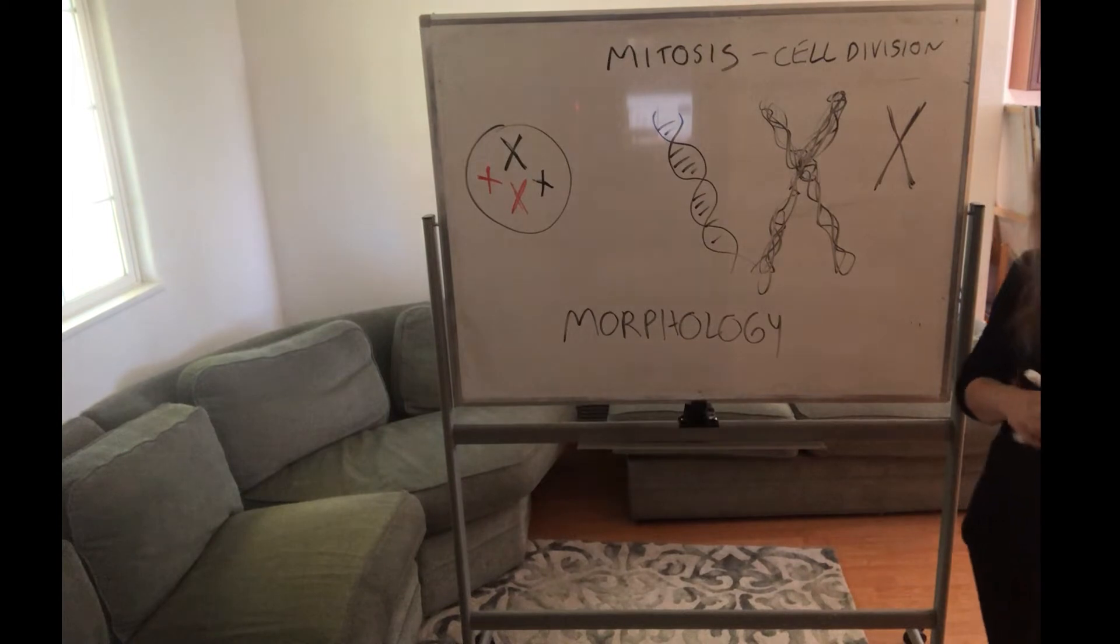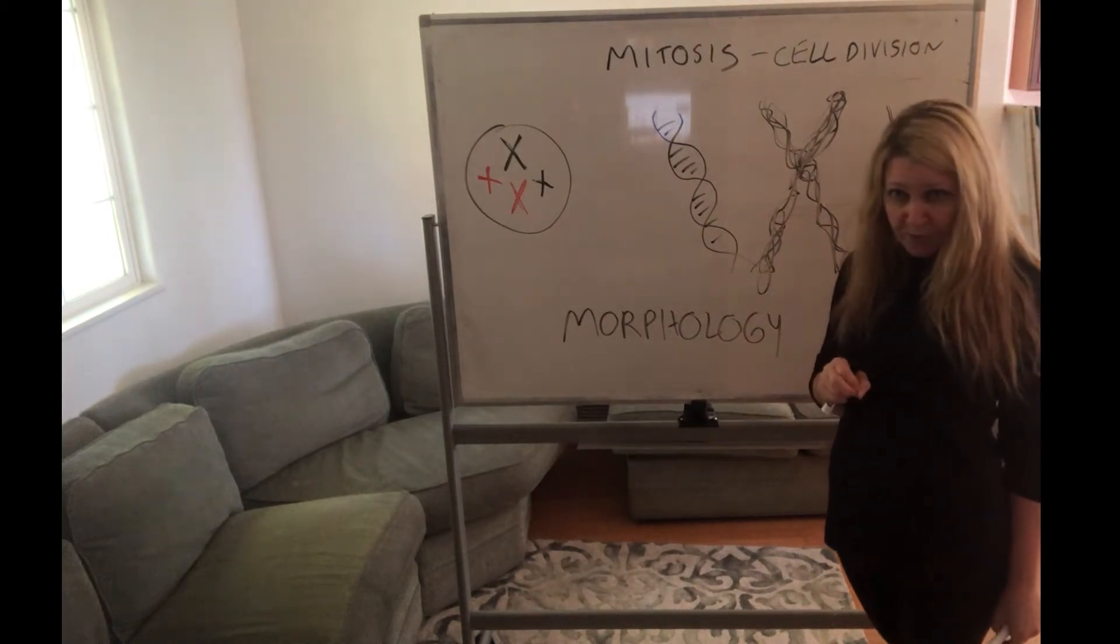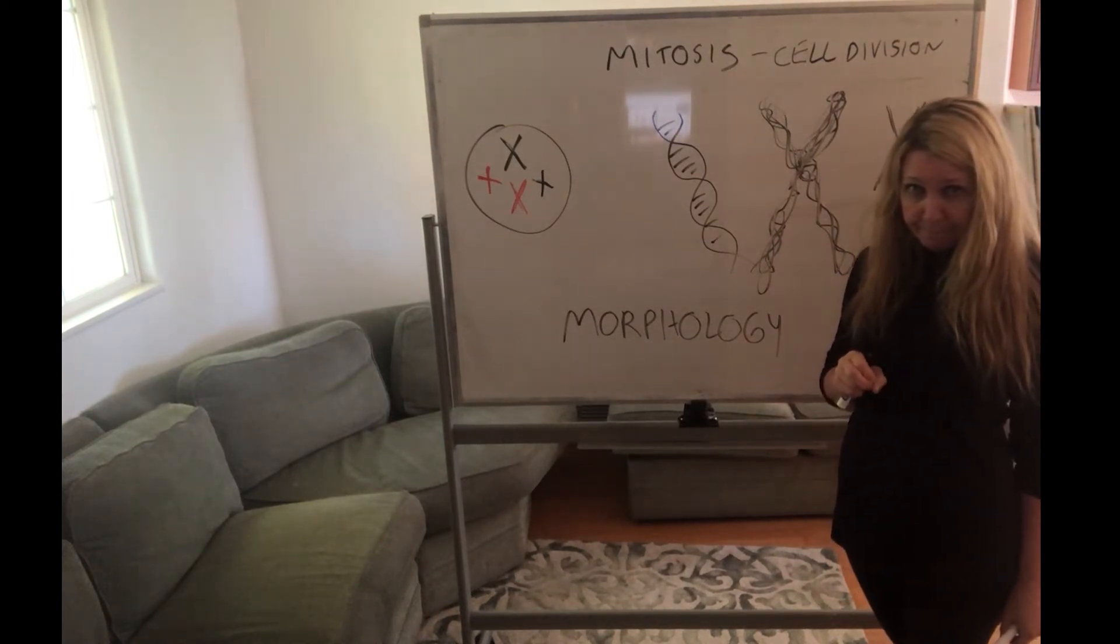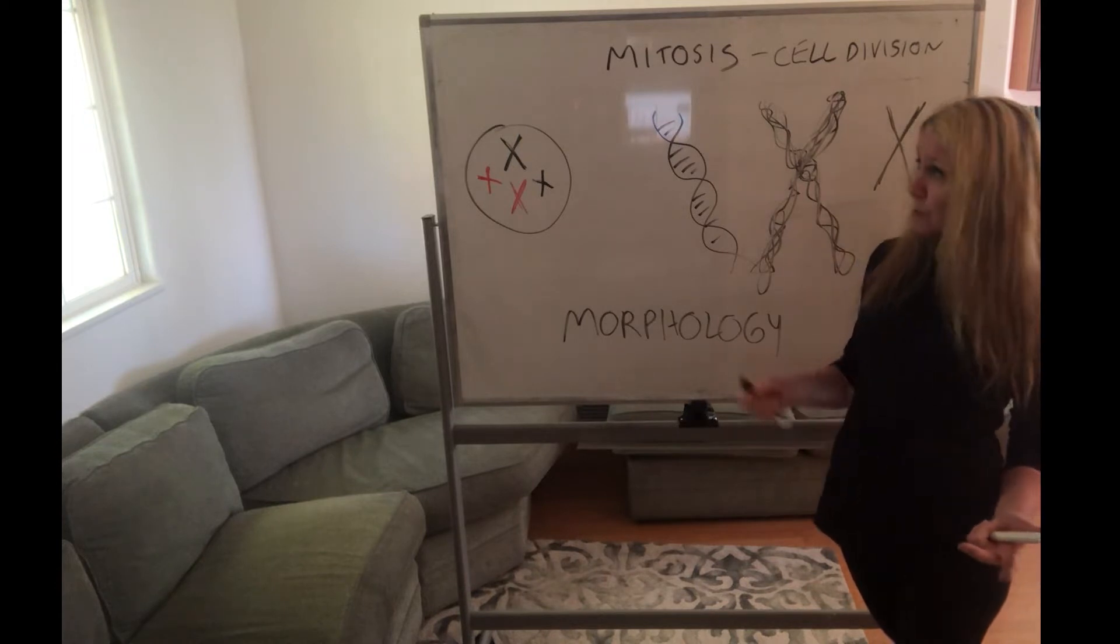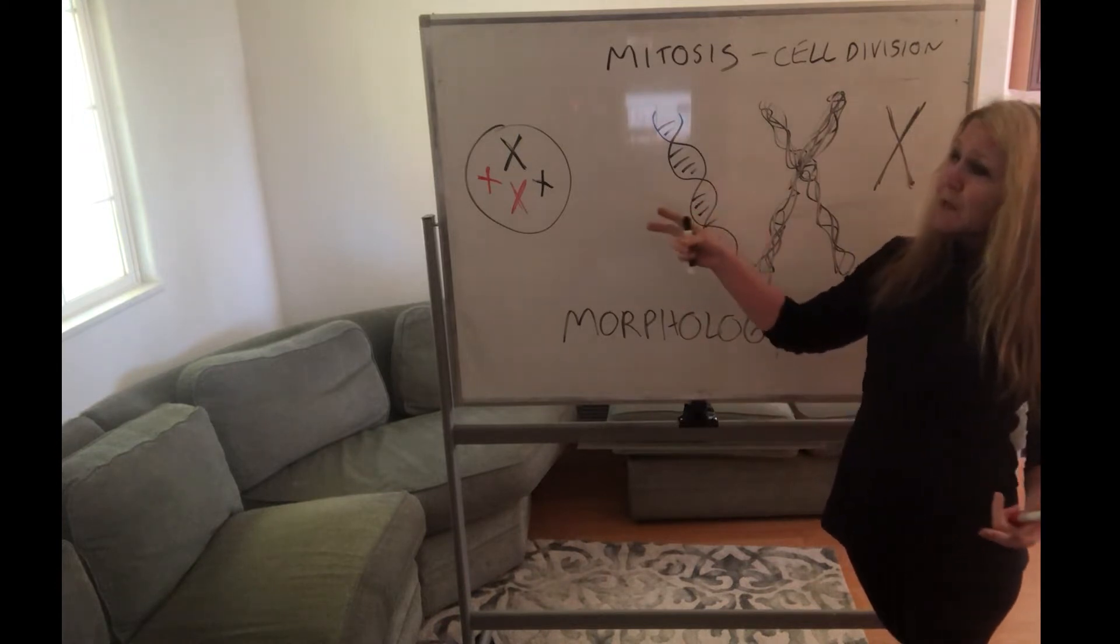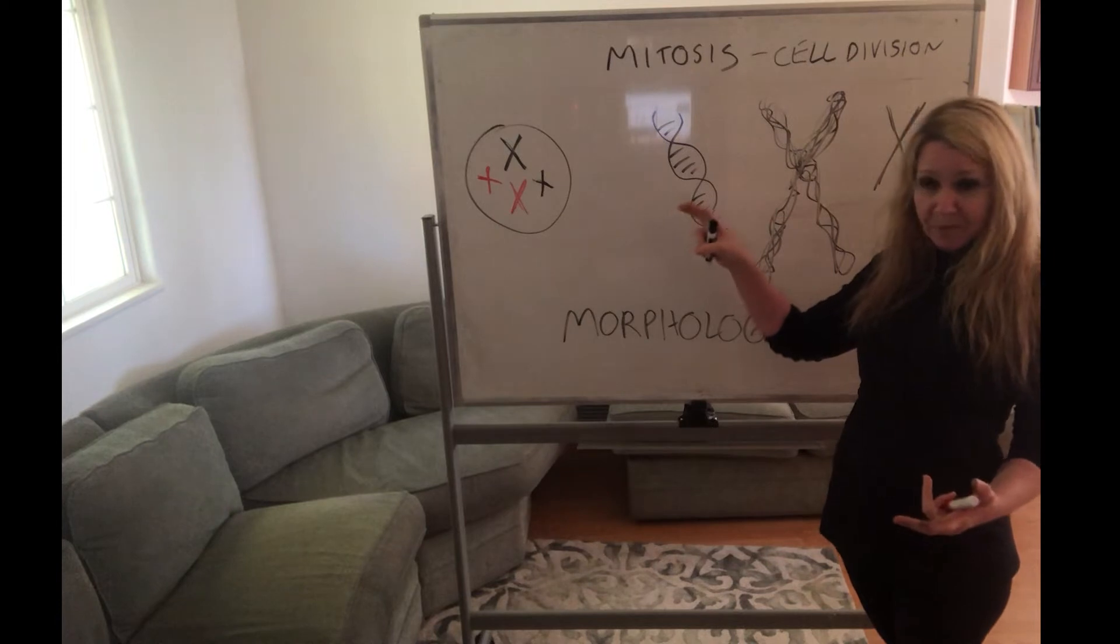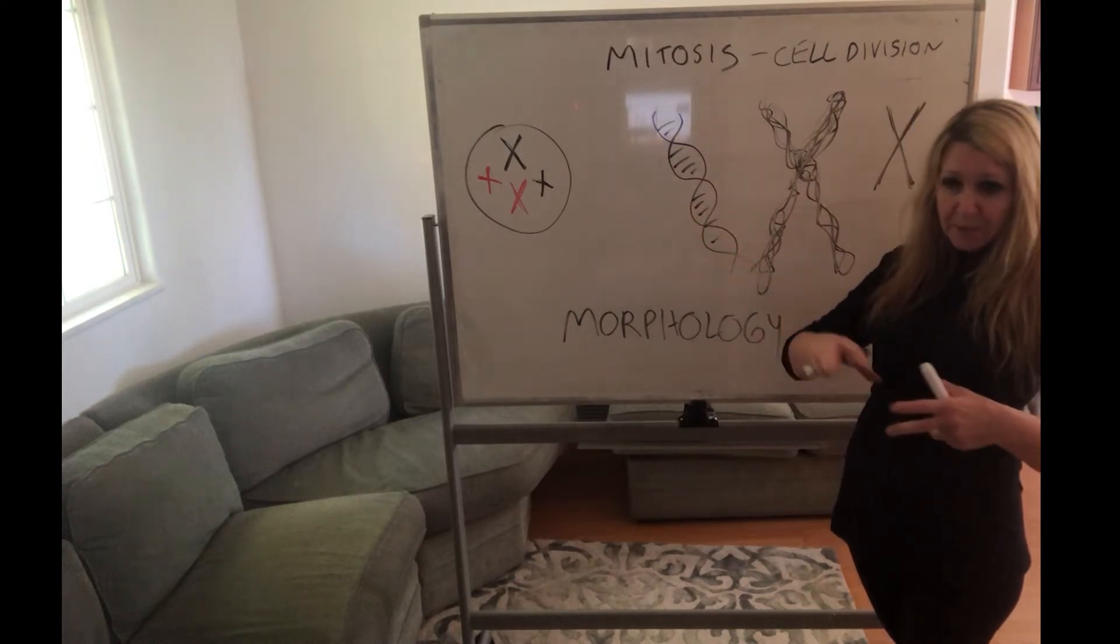Now, humans—remember we have 23 pairs, so we have 46 total chromosomes in every one of our cells, except for sex cells, because they're haploid—they have half as much. This cell, I'm not going to show 46 chromosomes. I'm just going to show four for the demonstration.